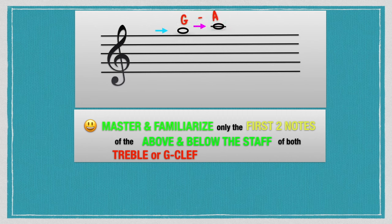The notes above the bass clef staff are B, C, D, E, F, G, A, and B. Just remember B and C. For the notes below the bass clef staff — F, E, D, C, B, A, and G — just remember F and E.